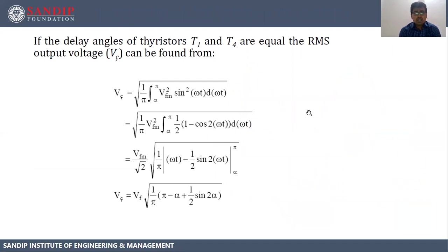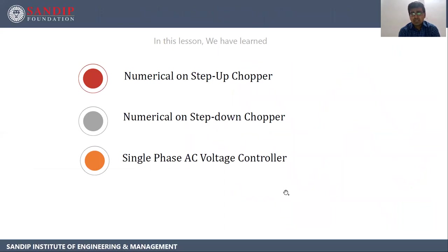The RMS output voltage for the AC to AC converter is Vf into under root of 1 by pi times alpha minus pi minus alpha plus 1 by 2 times sine 2 alpha. In this lesson, we have learned numericals on step-up chopper, numericals on step-down chopper, and single phase AC voltage controller. Thank you.